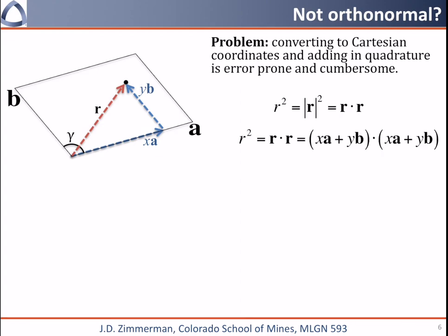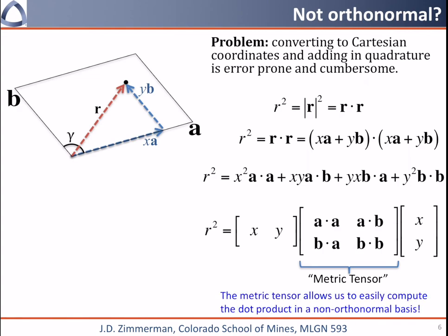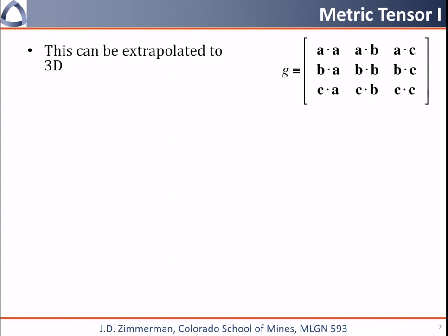So when I do this, r dot r is going to be x a plus y b dotted with x a plus y b. If we multiply this out, you'll get x squared a dot a plus x y a dot b plus y x b dot a plus y squared b dot b. Now if you've done a lot of linear algebra, you may notice that this would be really easy to write down in matrix form. The equivalent equation is written down here. So r squared is going to be the vector x y multiplied by this tensor of a dot a, a dot b, b dot a, b dot b, multiplied by the vector x y again. This thing in the middle is called the metric tensor. The metric tensor is really important because it allows us to easily compute the dot product in a non-orthonormal basis. We can extend this metric tensor into three dimensions by simply adding an extra row and a column to our metric tensor and filling it up with the correct dot products.